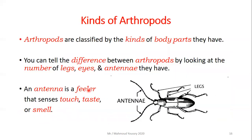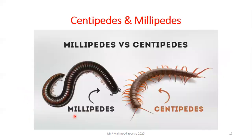Arthropods are classified by the kinds of body parts they have. You can tell them apart by the number of legs, the number of eyes, and the number of antennae. An antenna is a feeler attached to the head that senses touch, taste, and smell.